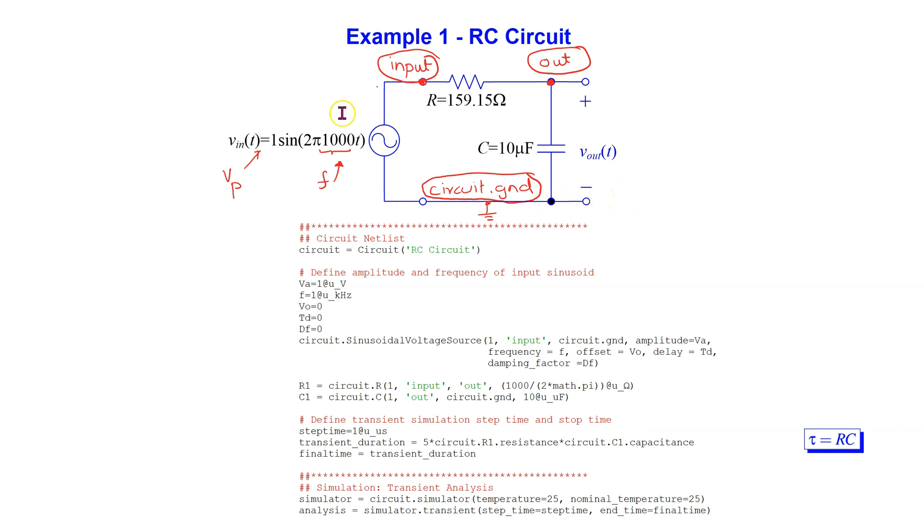It is easy to simulate this circuit in PySpice. We define the amplitude and frequency of the input sinusoidal voltage. Using descriptive node labeling, we translate the circuit diagram into a netlist as shown here.